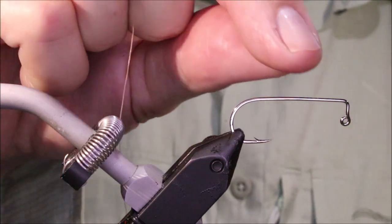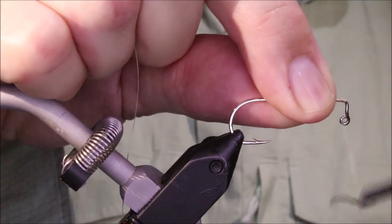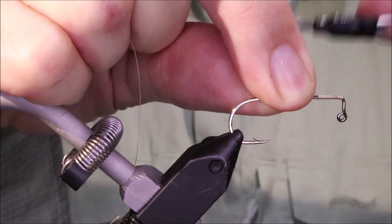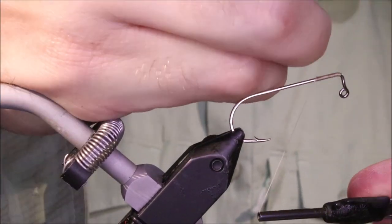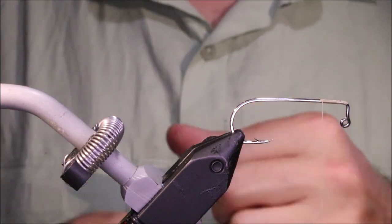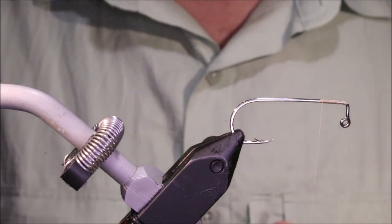You can tie them in different sizes and all of that to suit. But it's a very subtle bait, a fly I should say. Sinks slowly, the tail hangs, it hops. When you hop it or when you drag it, it behaves in the same way as the soft plastic.